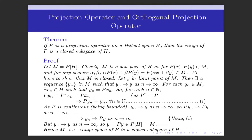Now we shall prove a theorem: if P is a projection operator on a Hilbert space H, then the range of P is a closed subspace of H. A projection operator P means P is a mapping from H to H, P is a linear operator, and P squared is equal to P.